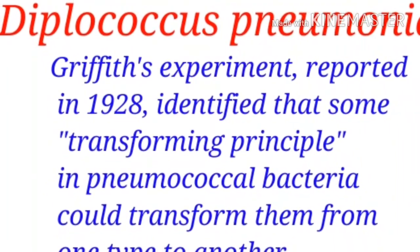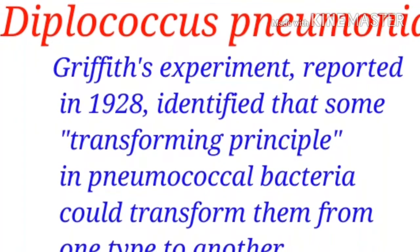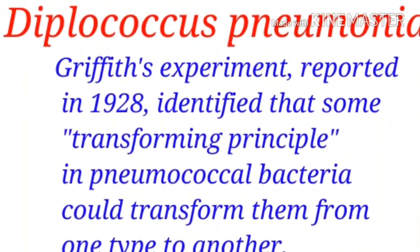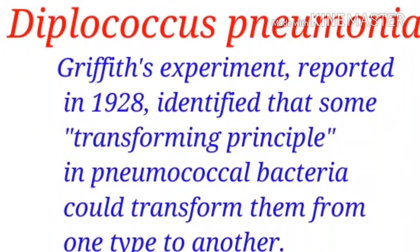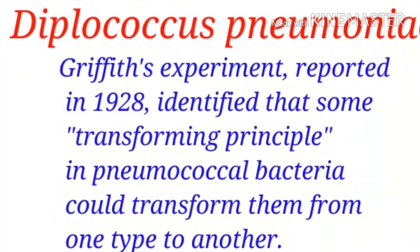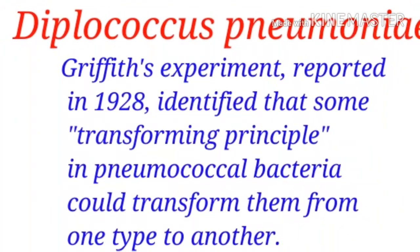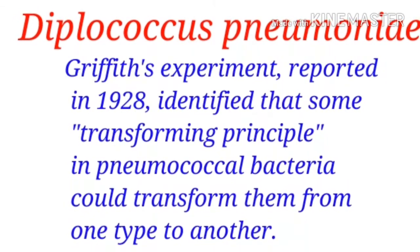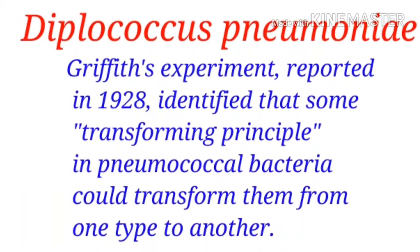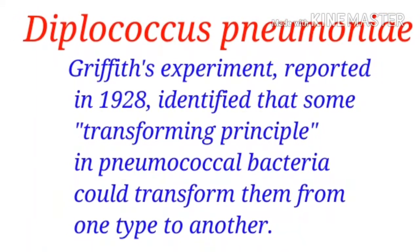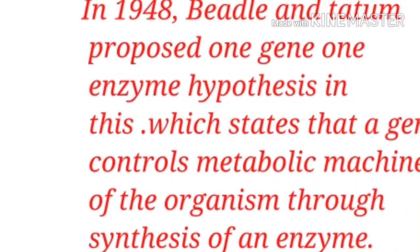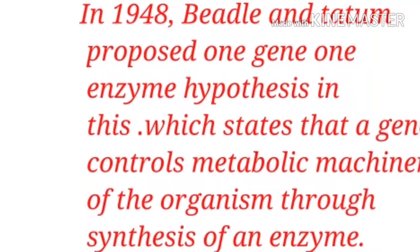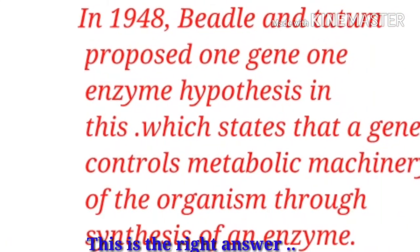The third option is Diplococcus pneumoniae. Griffith's experiment, reported in 1928, identified that some transforming principle in pneumococcal bacteria could transfer characteristics from one type to another.